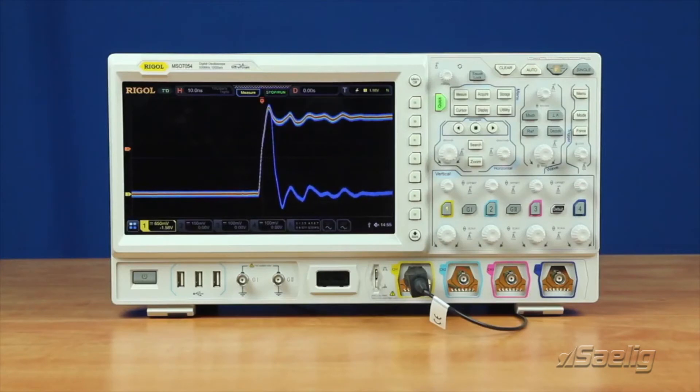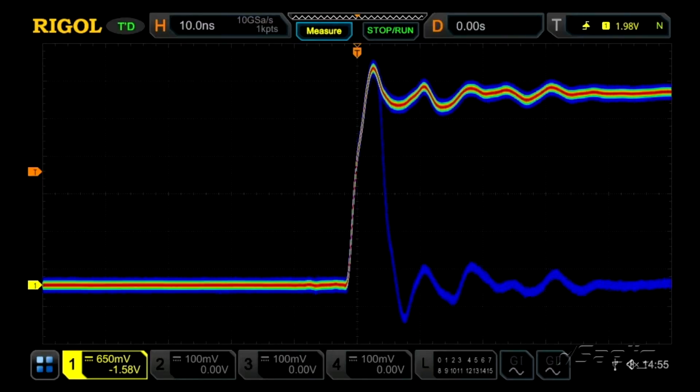The first improvement to the pass-fail testing is speed. This signal is a 1 megahertz square wave with a glitch every millisecond. So one out of a thousand transitions are these short glitches.